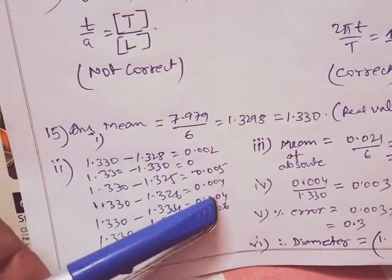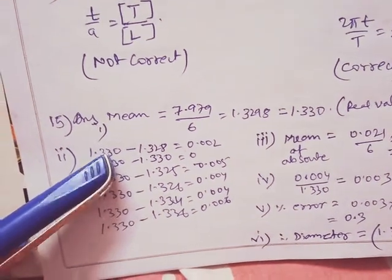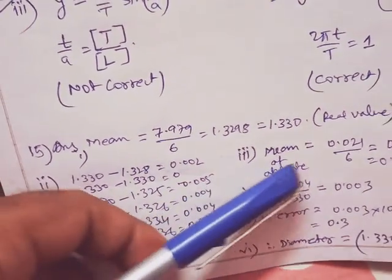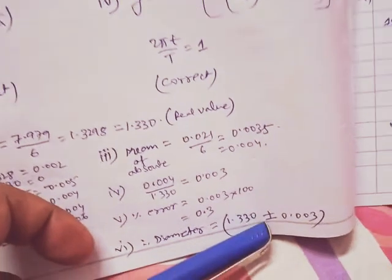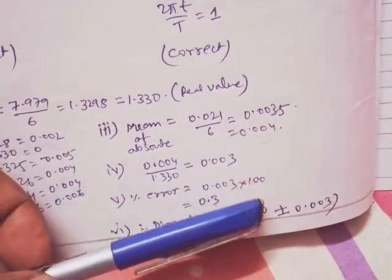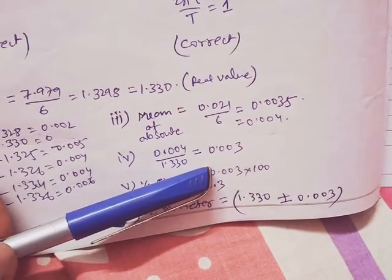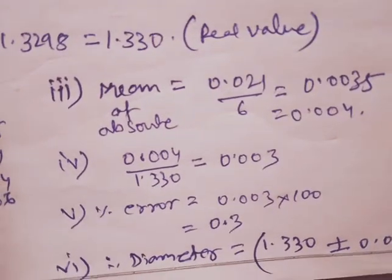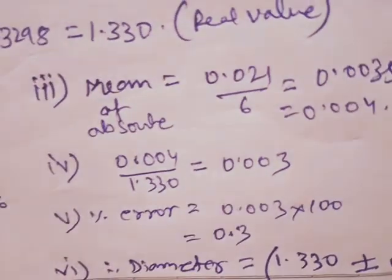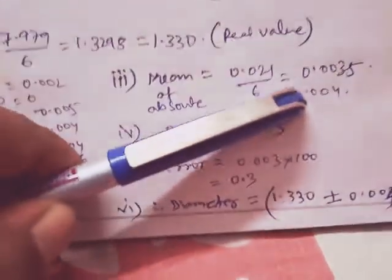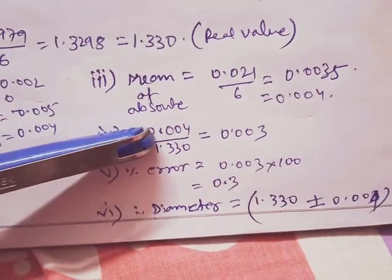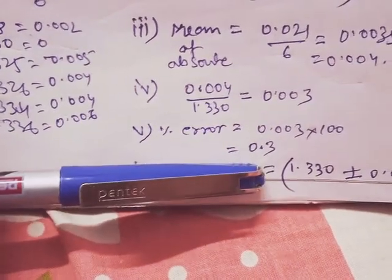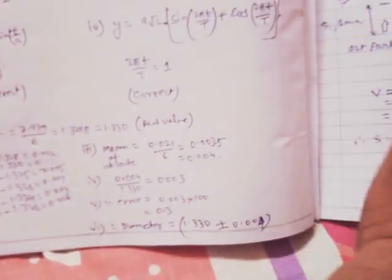So these are the answer and if I will make their difference, I think you will get the absolute value, because this is the real value, real minus experimental will give you the absolute. But in all the absolutes, again you have to take the mean, so mean is 0.004. Mean of the absolute is equal to 0.004. After that you can see, mean of all the absolutes will give you the mean absolute, and here it is 0.004 divided, this is relative value, and if you multiply with 100 it will give you the percentage, 0.3 percentage. So these are the answers, so you can match it.